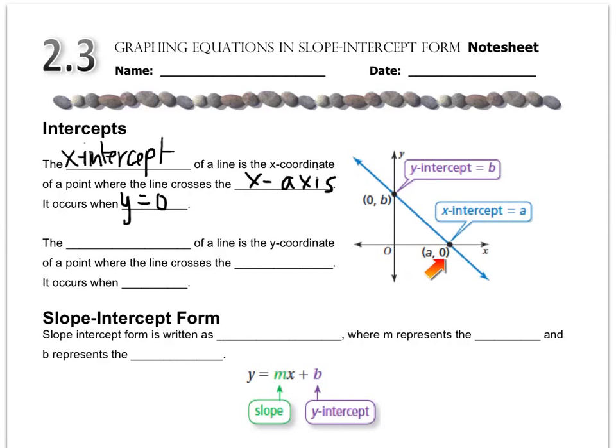And on the flip side, the y-intercept of a line is the y-coordinate of a point where the line crosses the y-axis. It occurs when x equals 0. So if you look over at this intercept, the x value is 0. It's called the y-intercept because it's intercepting the y-axis. The y-intercept hits the y-axis. The x-intercept hits the x-axis.